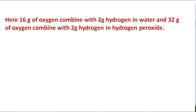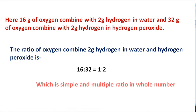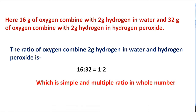Here, 16 grams of oxygen combines with 2 grams of hydrogen in water, and 32 grams of oxygen combines with 2 grams of hydrogen in hydrogen peroxide. The ratio of oxygen combined with 2 grams of hydrogen in water and hydrogen peroxide is 16:32, which equals 1:2 — a simple whole number ratio.